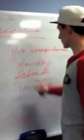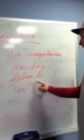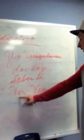Otros irregulares en la forma yo son Dar: Doy, Saber es Sé, y Ver: Veo.